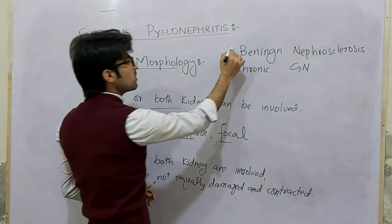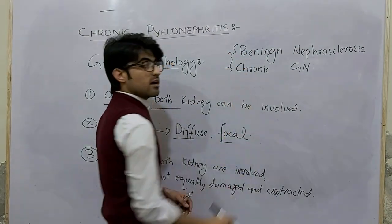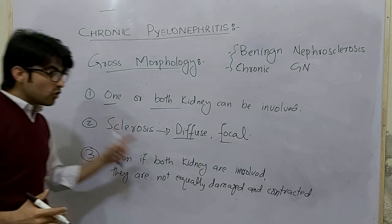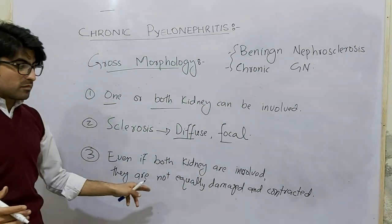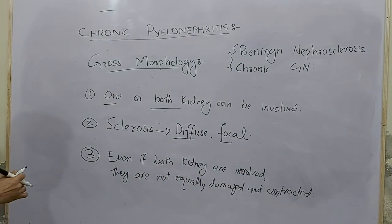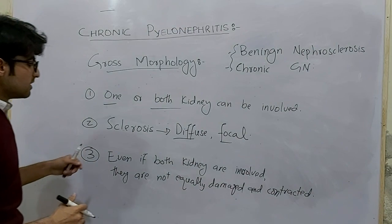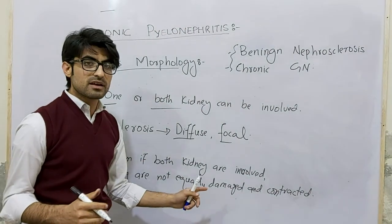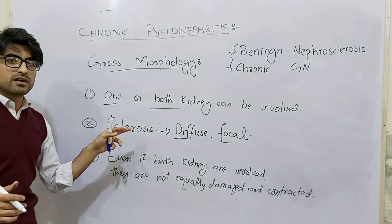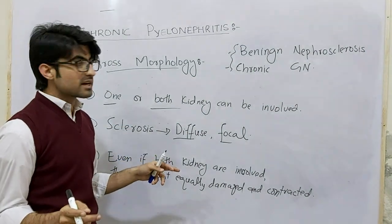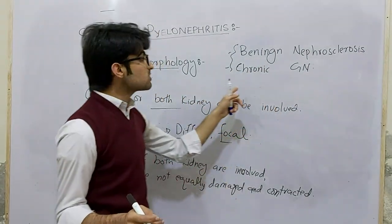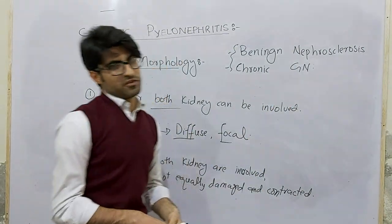In benign nephrosclerosis and chronic glomerulonephritis, kidneys are equally contracted. In chronic pyelonephritis, even if both kidneys are involved, the damage and contraction will not be equal. So if we see asymmetrically contracted kidneys on a radiologic image, we diagnose chronic pyelonephritis. If kidneys are equally contracted, it can be benign nephrosclerosis or chronic glomerulonephritis.